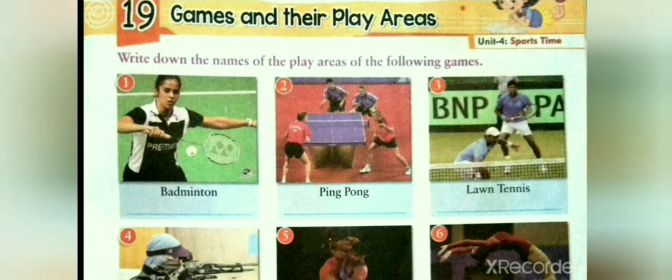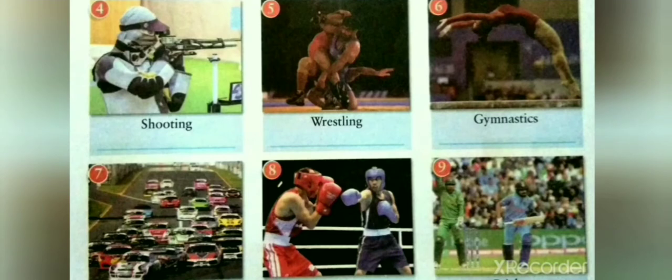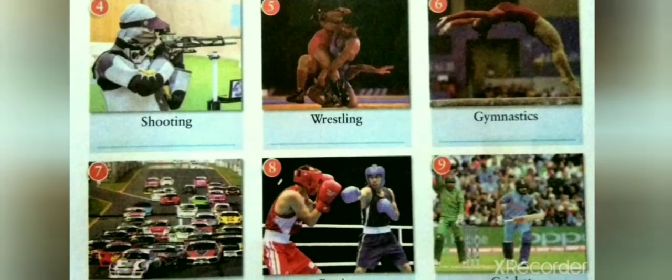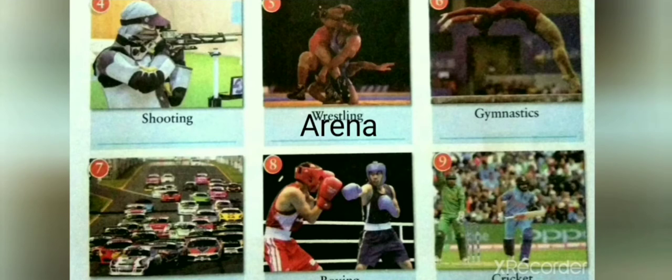The third picture is the sport lawn tennis, and lawn tennis is played in the play area called court. We will write: court. The fourth picture is the sport shooting, and shooting is done in the play area called range. We will write: range. The fifth picture is wrestling, and the play area where wrestling is done is called arena. We will write: arena.